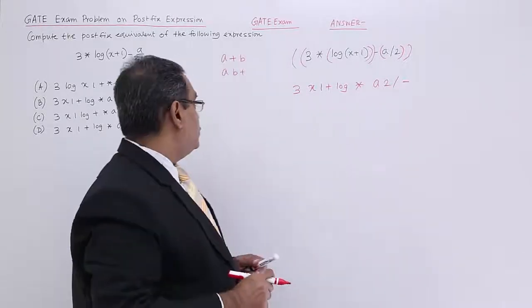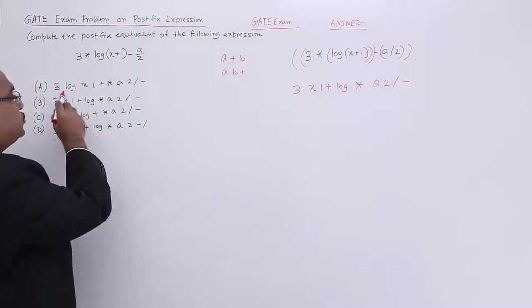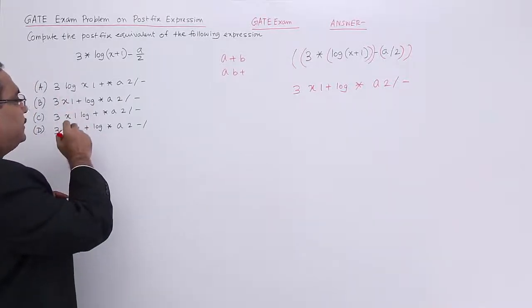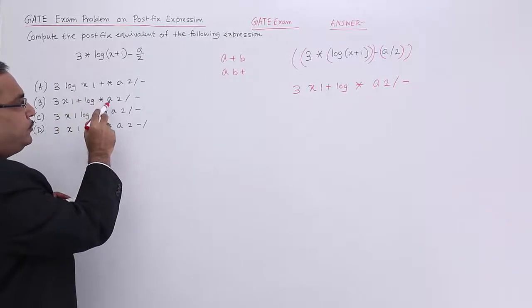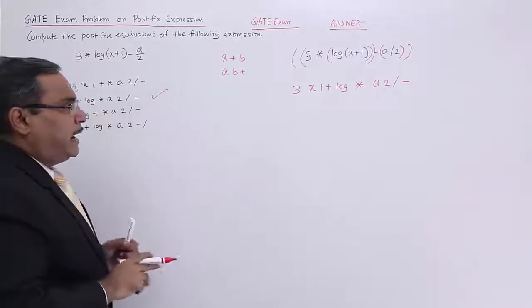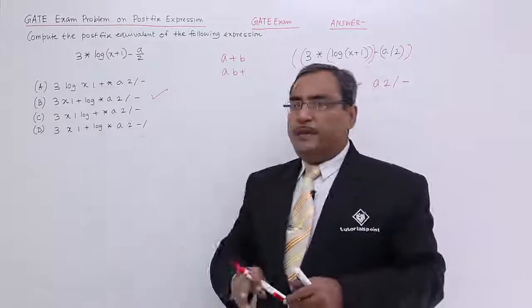Now that is the expression. So let me check. 3 x 1 I am having here in this 3. 3 x 1 plus I am having only here. So 3 x 1 plus log star a 2 slash minus. So I shall, my answer will be going for option number B.